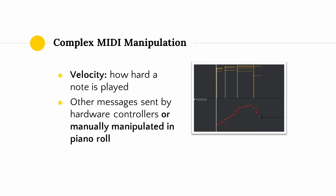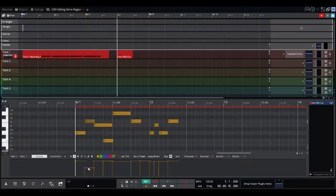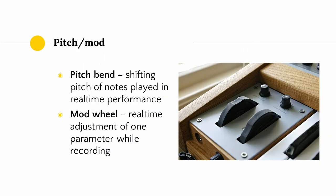Most MIDI keyboards will automatically emit information about the velocity of the note being played as they are being used to record MIDI data. However, the piano roll can also be used to manually edit the velocity of notes. Besides note velocity, there are many other MIDI messages which can be emitted by hardware components connected to or incorporated as part of a MIDI controller, and can also be manually manipulated using a typical piano roll.